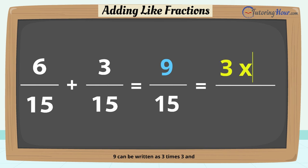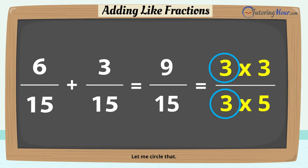9 can be written as 3 times 3, and 15 can be written as 3 times 5. The numerator and the denominator have a common factor, 3. Let me circle that. The 3 in the numerator and the 3 in the denominator cancel each other, leaving us with 3 over 5.